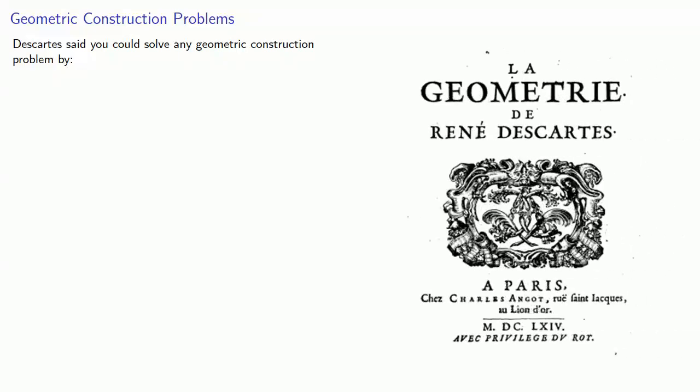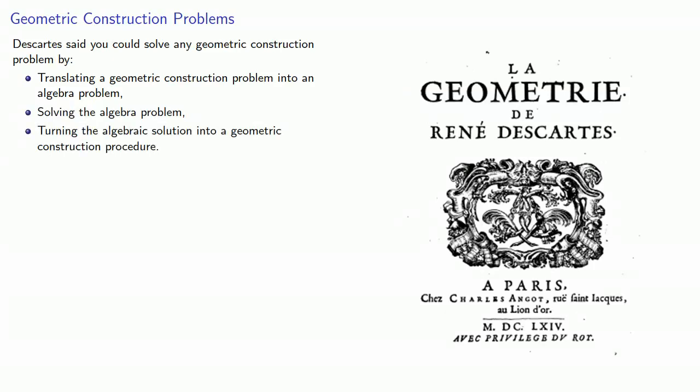Descartes said you can solve any geometric construction problem by translating a geometric construction problem into an algebra problem, solving the algebra problem, and then turning the algebraic solution into a geometric construction procedure.